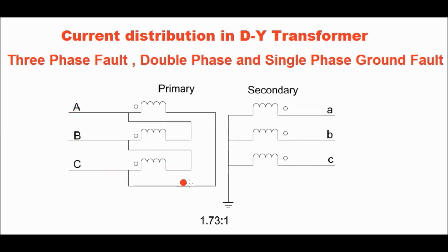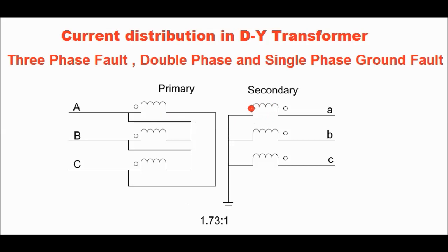In this figure, a delta-star transformer has been shown. This is the HV side winding and this is the LV side winding. The red, yellow and blue phase respectively of the high voltage delta winding, and the red, yellow and blue phase of the LV star side winding are shown. The transformation ratio or turns ratio is 1.73 to 1, meaning the induced voltage in the red phase divided by the induced voltage in the red phase on the secondary is equal to 1.73.